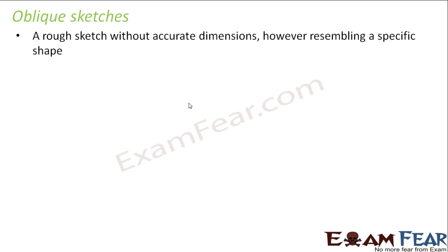Let us discuss about oblique sketches. What are oblique sketches? These are like rough sketches — a rough sketch without accurate dimensions, however resembling a specific shape. Even though we do not draw the particular structure with exact dimensions, you just draw a sketch in such a way that by looking at it, you can say this resembles a cube. So it is just like a rough sketch without accurate dimensions.